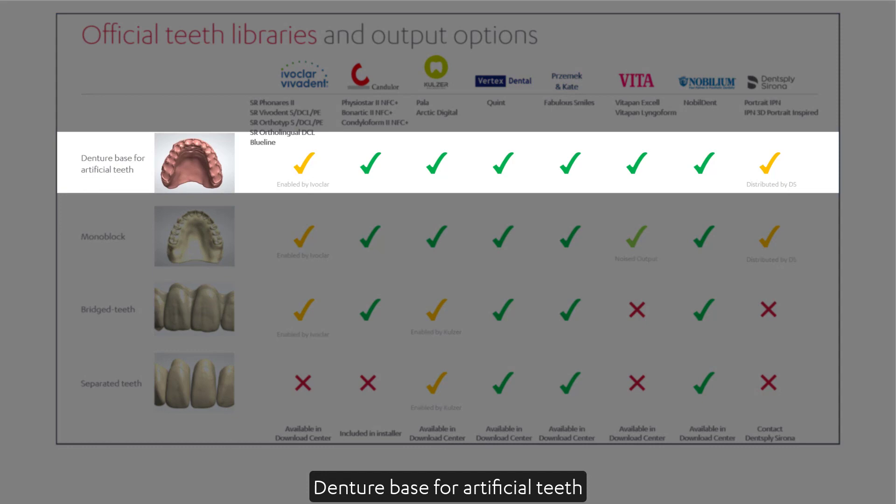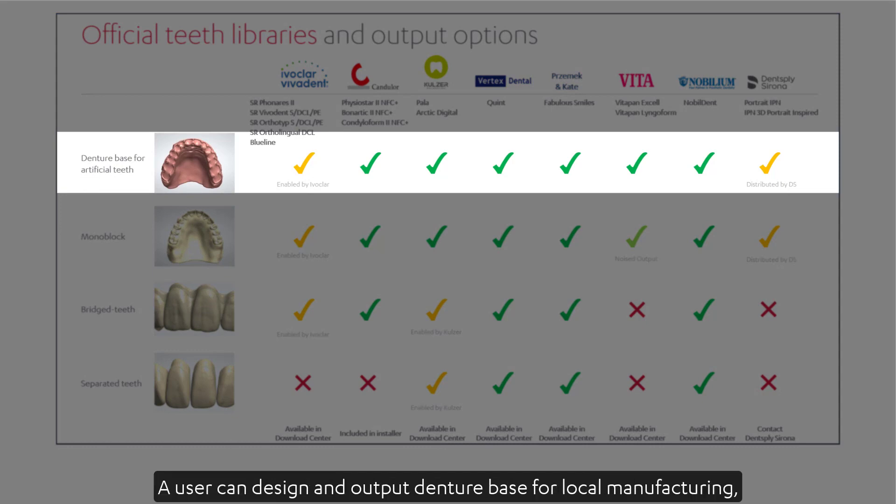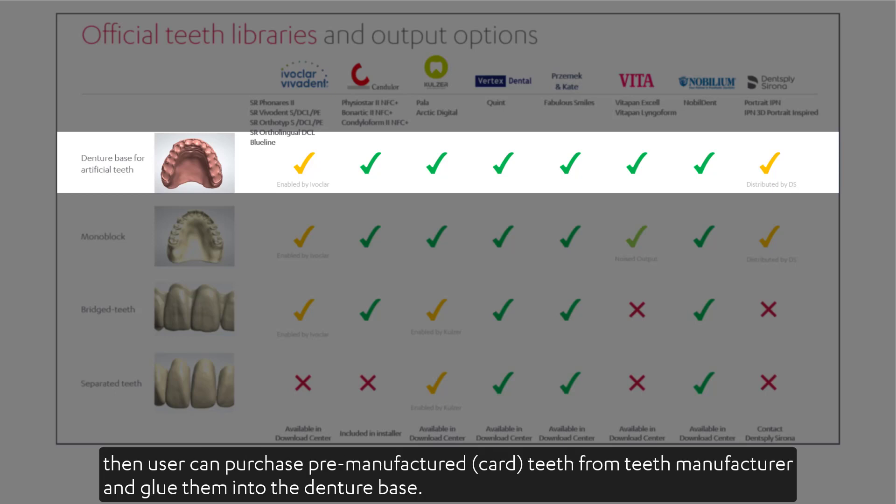Denture base for artificial teeth: a user can design and output a denture base for local manufacturing. Then the user can purchase pre-manufactured card teeth from teeth manufacturers and glue them into the denture base.